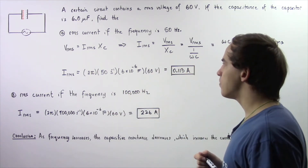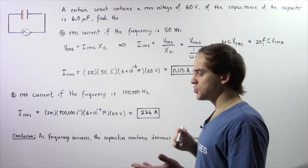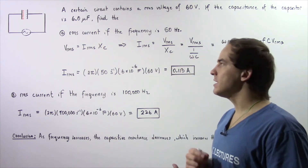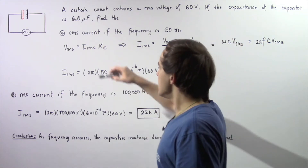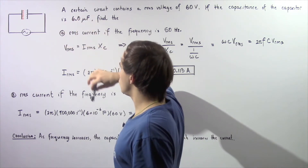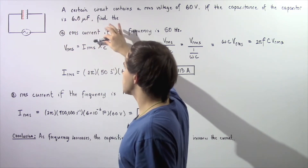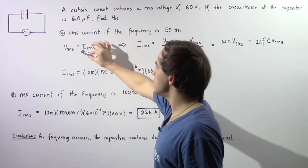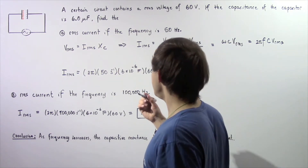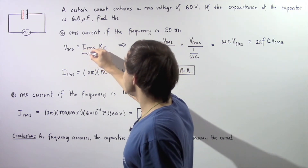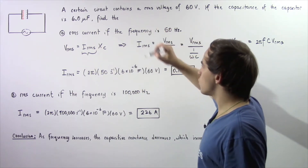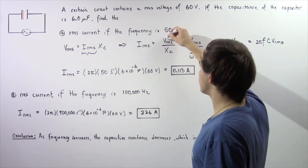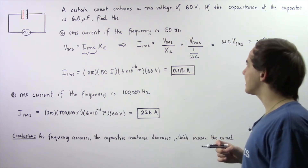Let's begin with part A and recall the relationship between the root mean square current, the root mean square voltage, and the reactance of our capacitor. The root mean square voltage is equal to the product of the root mean square current and our capacitive reactance. Since we are solving for current, we rearrange: the root mean square current equals the root mean square voltage divided by the capacitive reactance.